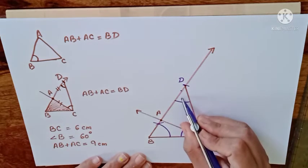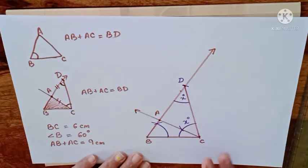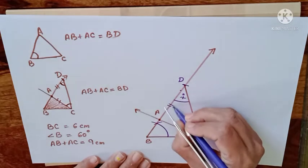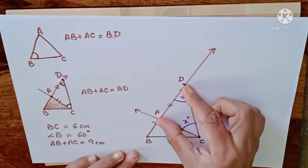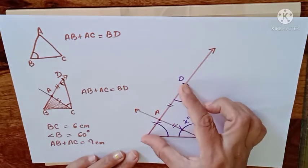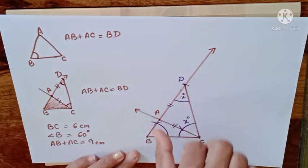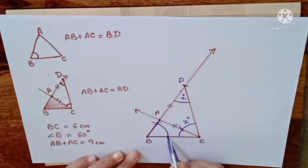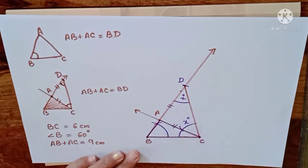Extend the ray so that it cuts BD at point A. If this angle is x degrees, the other is also x degrees — we made equal angles. By making equal angles, this side becomes equal to that side. So whatever length you took off from the sum of two sides, you added it on the other side. ABC is the required triangle.